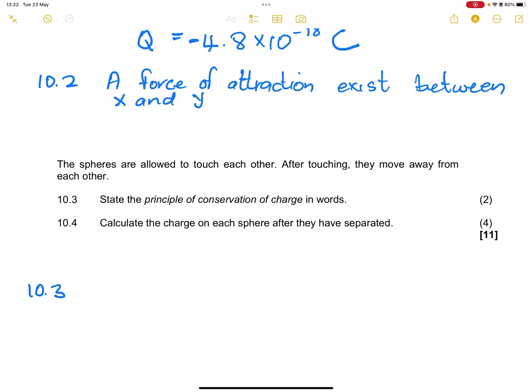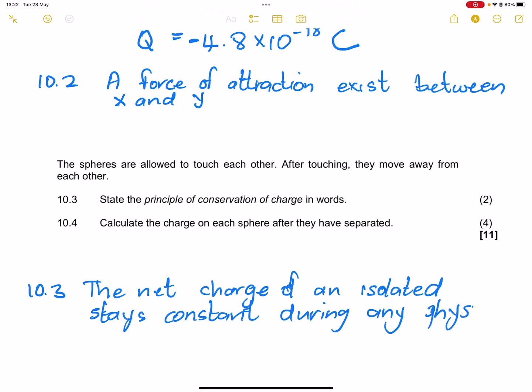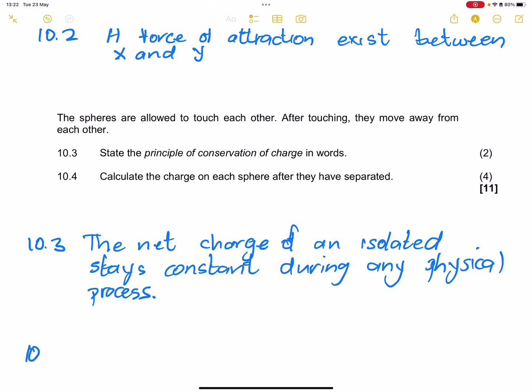So remember, the principle of conservation of charge simply states that the net charge in an isolated system is conserved or rather stays constant for any physical process. So we say that the net charge of an isolated system stays constant during any physical process. Please remember that I will not be in the habit of writing these out fully, but in this case, given that we are starting out, I will do so. But just remember those definitions.